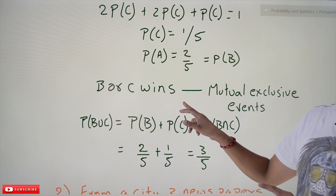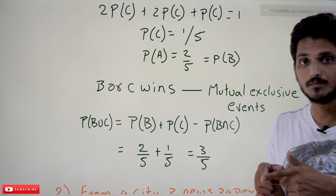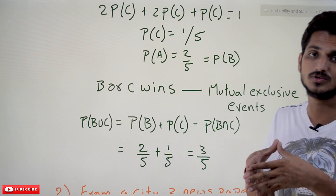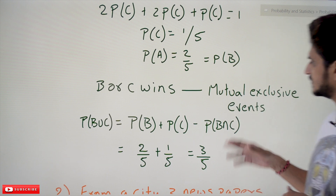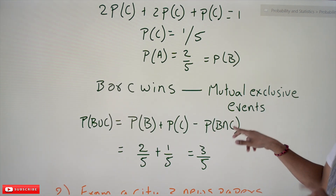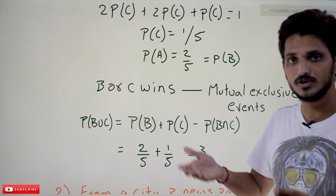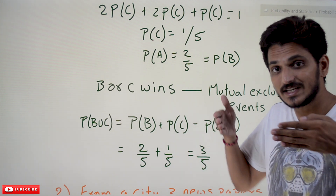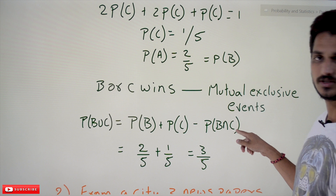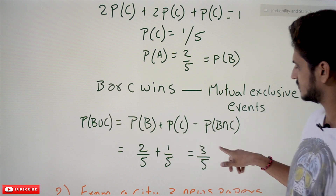Now for P(B or C): the key point is that only one person can win — not both at the same time — these are mutually exclusive events. P(B or C) = P(B) + P(C) − P(B ∩ C). Since B ∩ C is zero (mutually exclusive), P(B or C) = 2/5 + 1/5 = 3/5. This is our final answer.